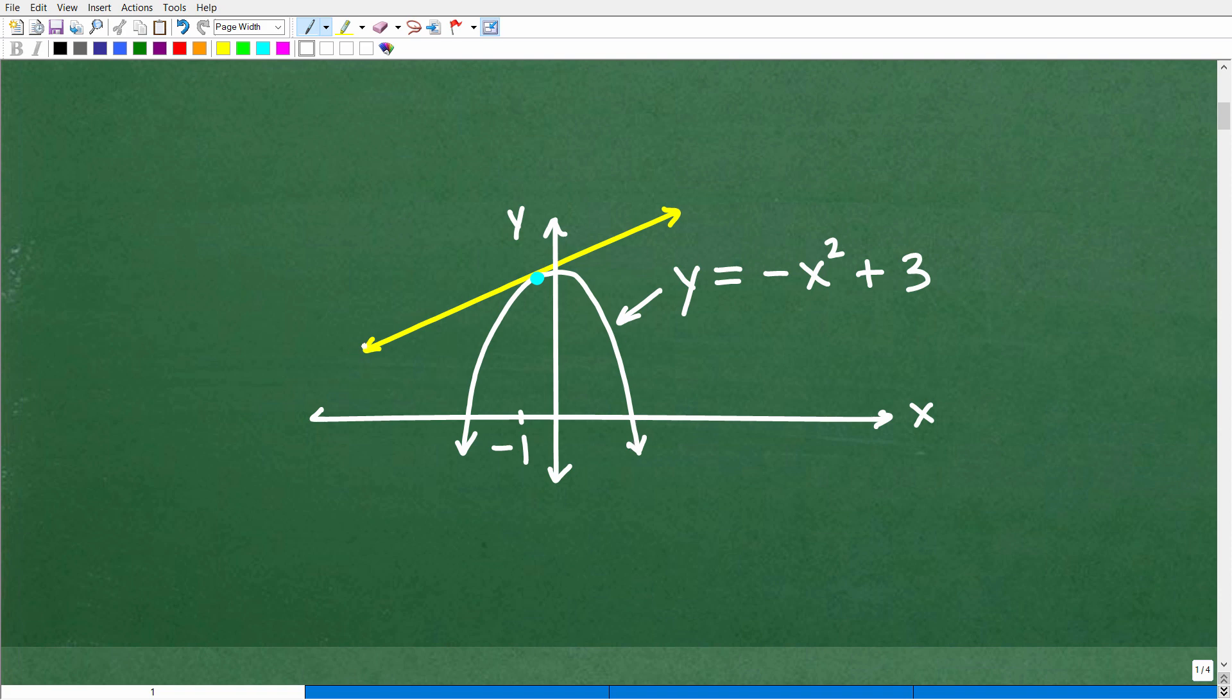Now, notice I have a yellow line here. This line is referred to as a tangent line. Tangent line—this is good terminology to know. A tangent line happens to be a line that touches a graph at one point, exactly one point. You can see here it's just bouncing off this graph right there. It's not intersecting the graph. It's literally just touching the graph at one particular point.